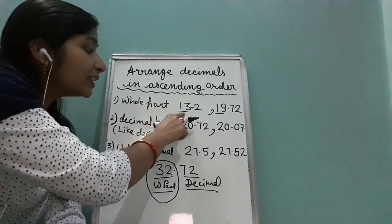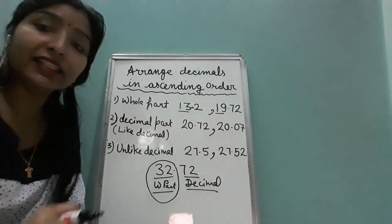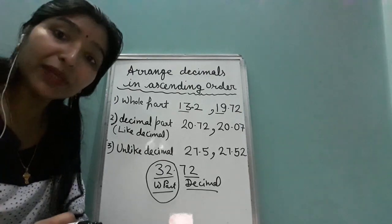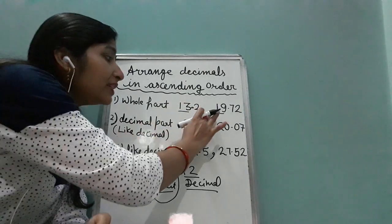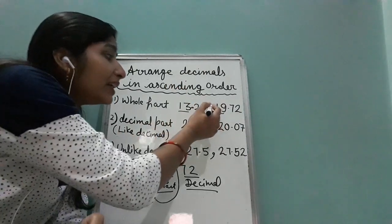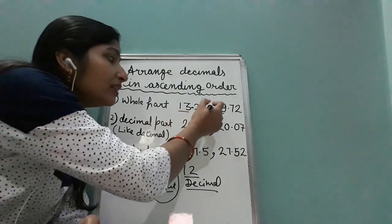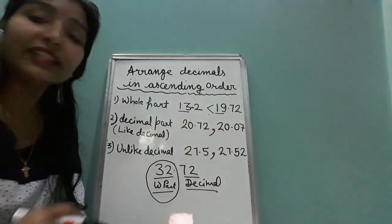Now see, this is 13 and this is 19. Can you tell me which is bigger? Yes, you can say that 19 is bigger than 13. So 19 is greater.